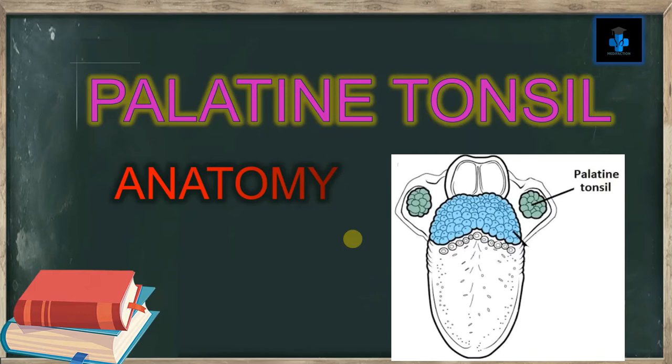Welcome to Medifaction. Today we will learn about the anatomy of the palatine tonsil. The palatine tonsils are a pair of soft tissue masses located at the rear of the throat or pharynx. Each tonsil is composed of tissues similar to lymph nodes, covered by a pink mucosa.